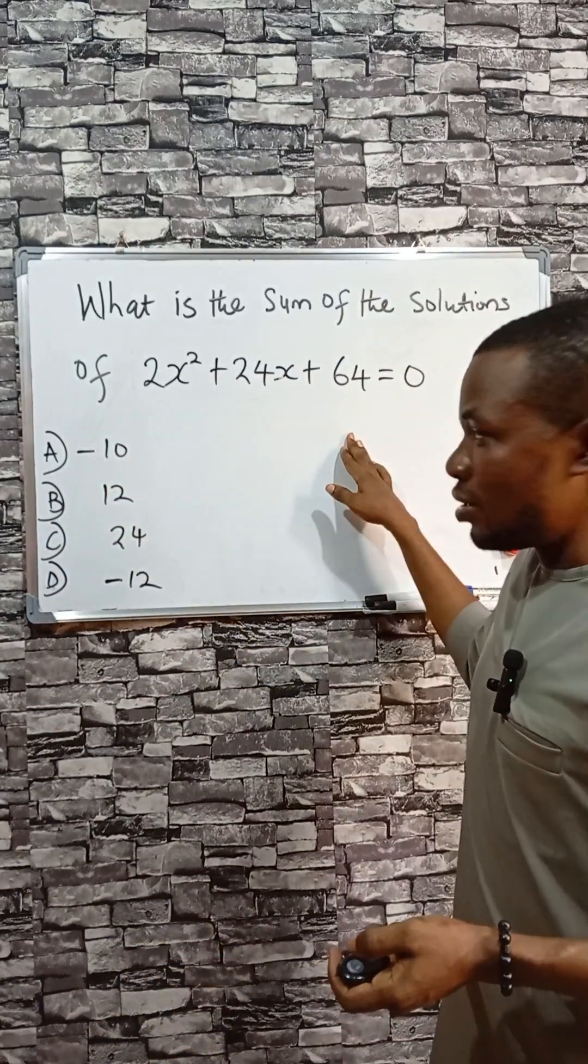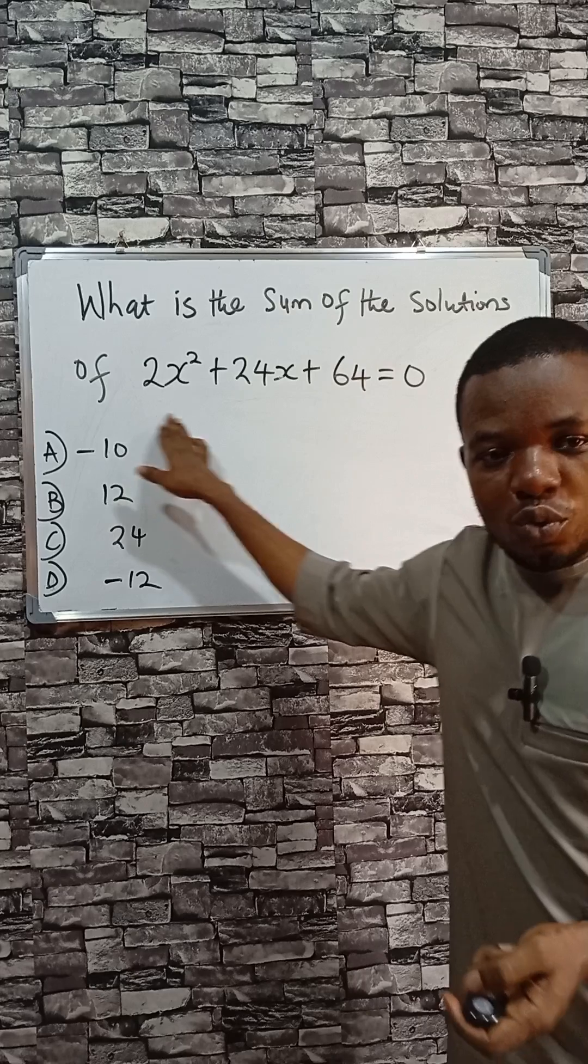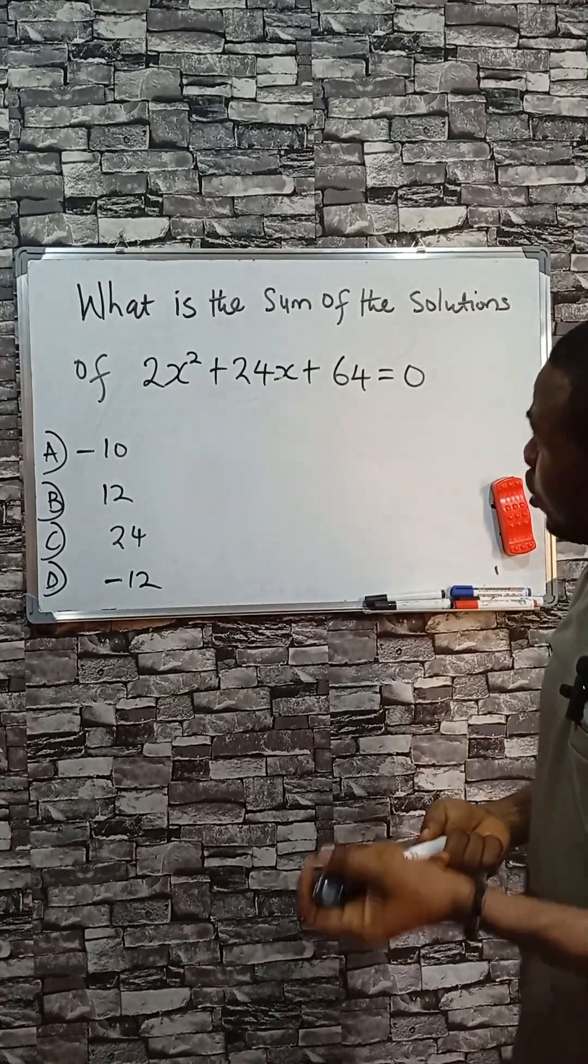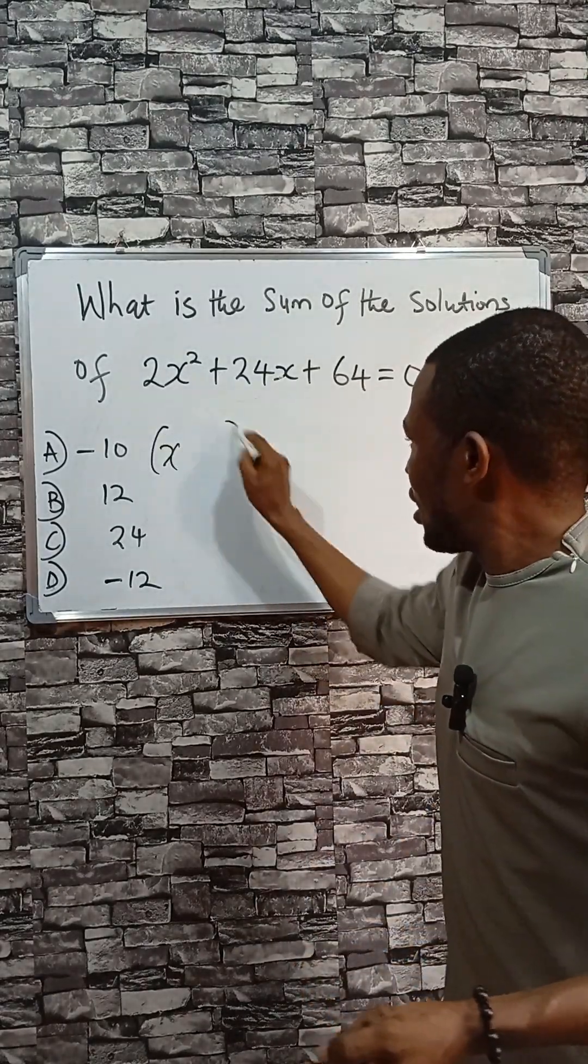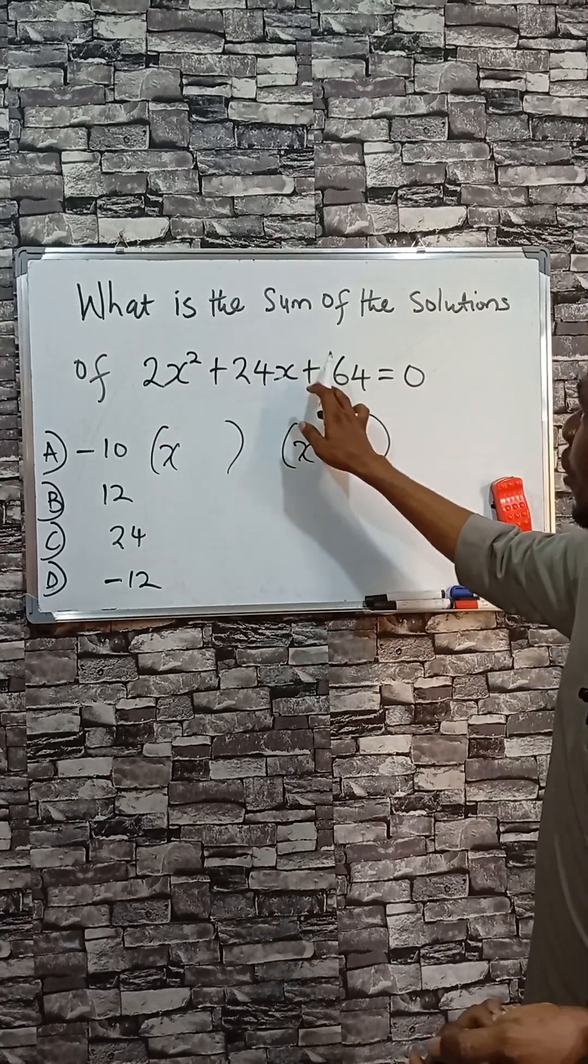Let me show you how to solve this in seconds. What is the sum of the solutions of this equation? Now would you want to factorize having two brackets? Because actually in a sense we are asked to find the sum of the solutions.